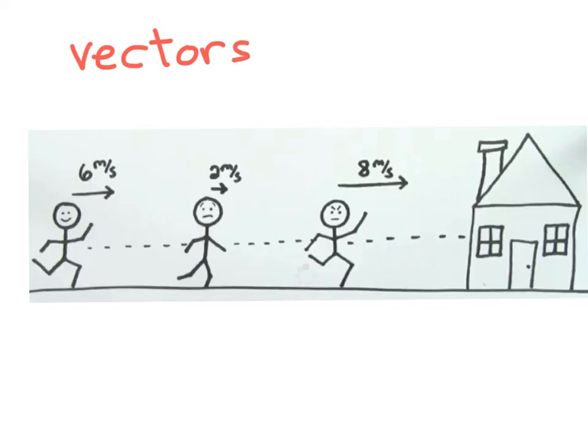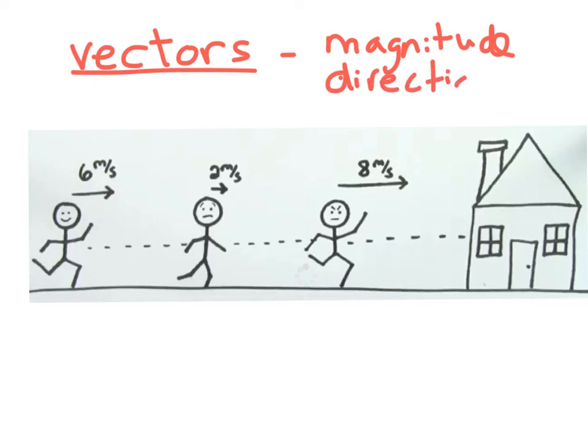It has a magnitude, which is the amount that it is, and it also has a direction. Velocity is represented in physics just like a force is, with an arrow that points in a particular direction and is as long as the magnitude. Acceleration is also a vector.